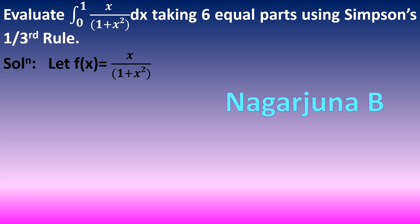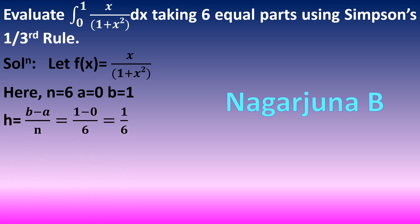Therefore, n is equal to 6, a is equal to 0, b is equal to 1. Now we need to find the value of h, which is the width. That can be calculated using the formula h equals b minus a divided by n, which gives 1 minus 0 divided by 6, equal to 1 by 6. Write this in fractional notation only; do not write it as a decimal. So h is equal to 1 by 6.